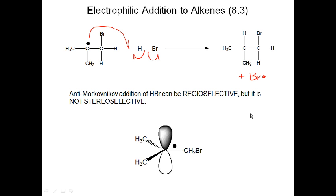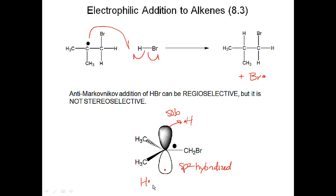Can anti-Markovnikov addition through a free radical be stereoselective? No — because the intermediate we go through is a free radical, which is sp2 hybridized. When I form a tertiary radical and add a hydrogen, 50% of the time the hydrogen couples from the top and 50% from the bottom. Even if I generated a chiral center, I would be generating a racemic mixture. So anti-Markovnikov addition cannot be stereoselective because it goes through an sp2-hybridized intermediate.